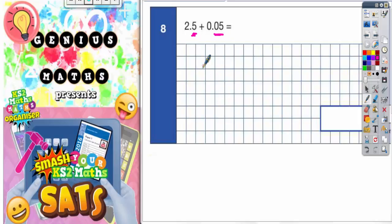So if we're doing a column method, we need to make sure we're lining the decimal points up. So I'm actually going to put the decimal points in first, and that will help me line those numbers up. And I'm just going to make a note at the bottom because that's actually a really important point that will help you a lot. So put decimal points in first.